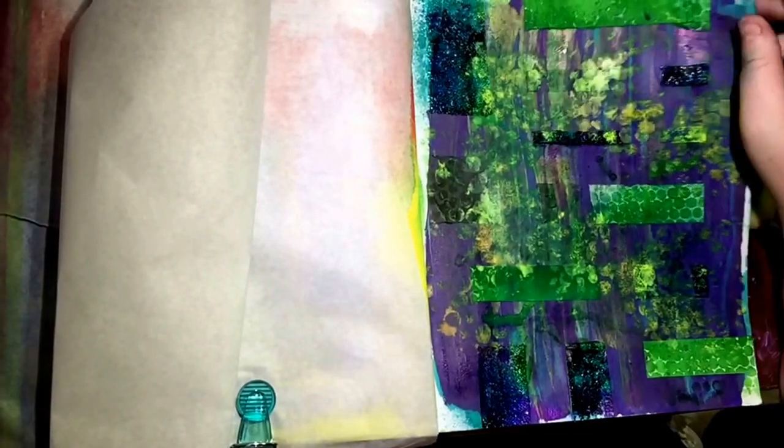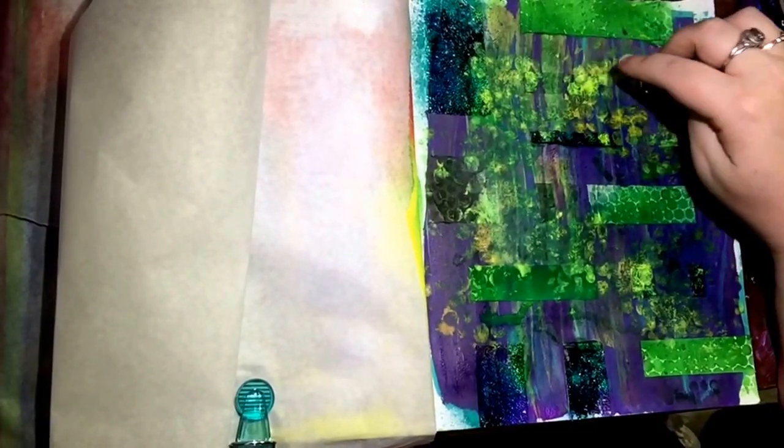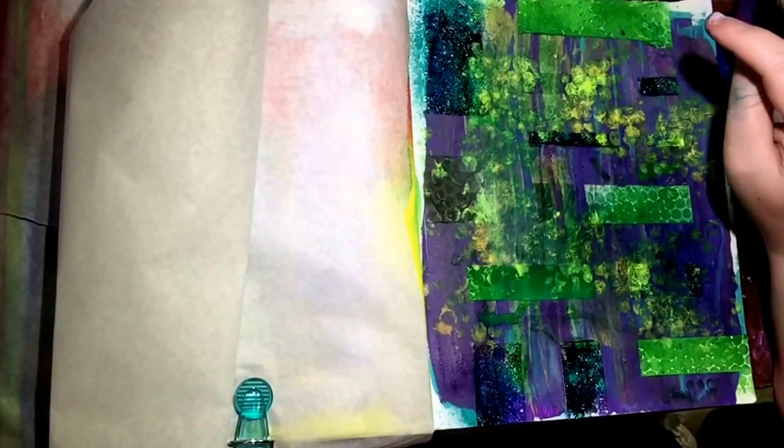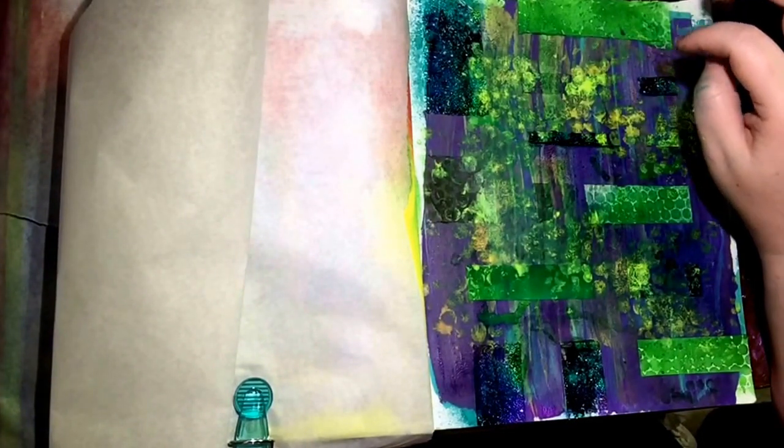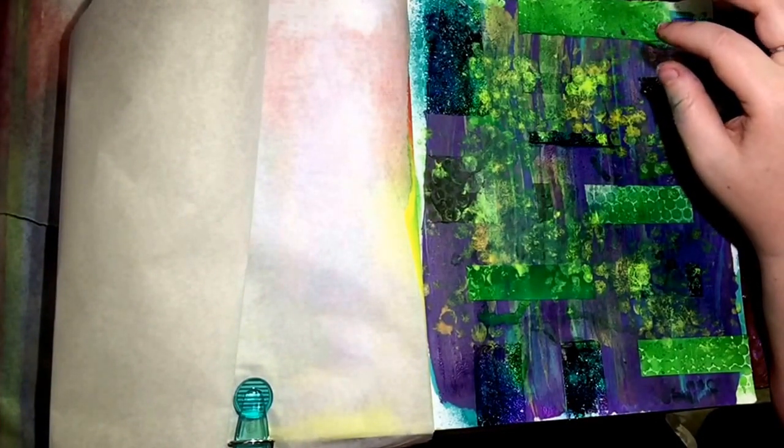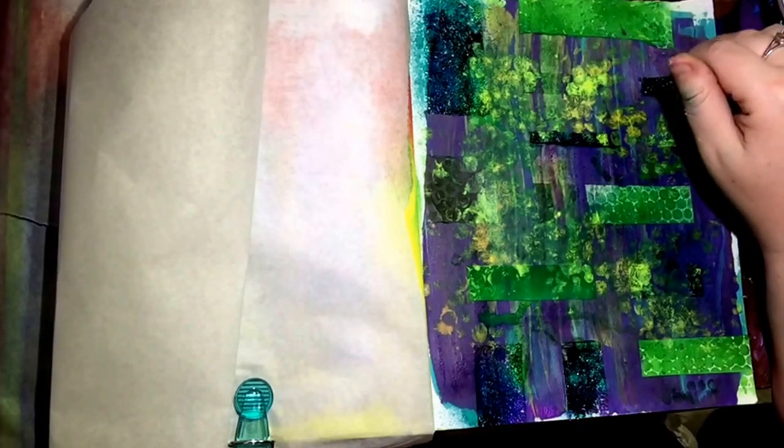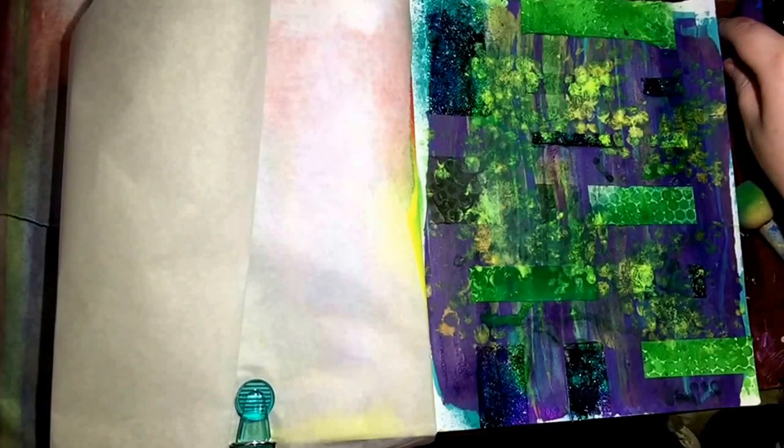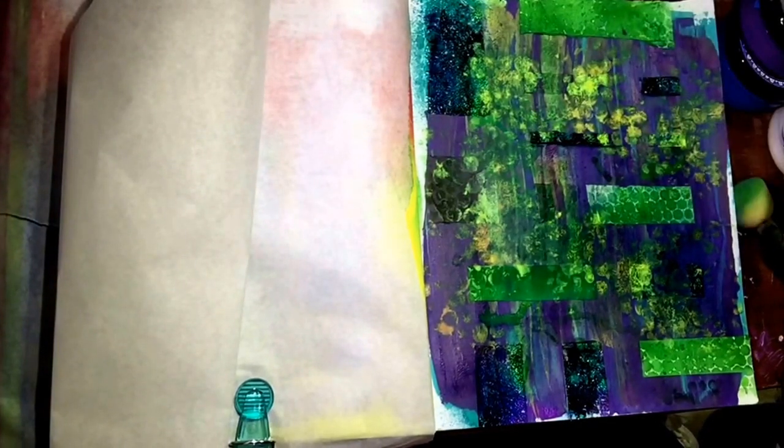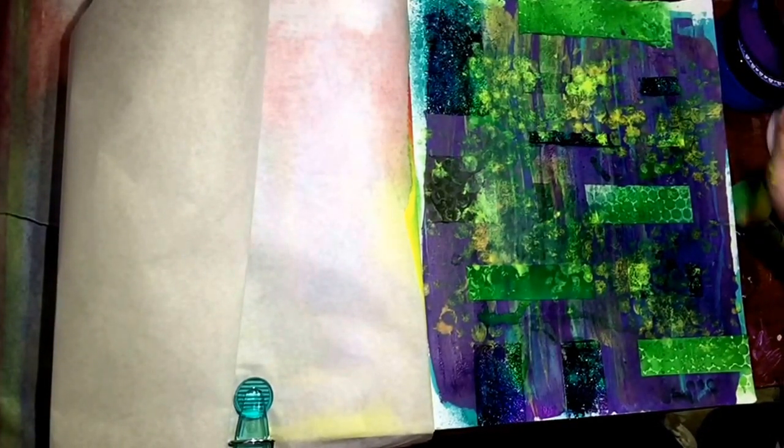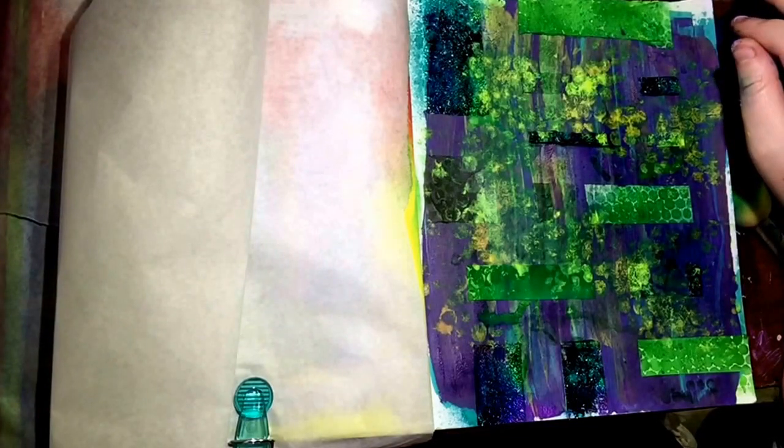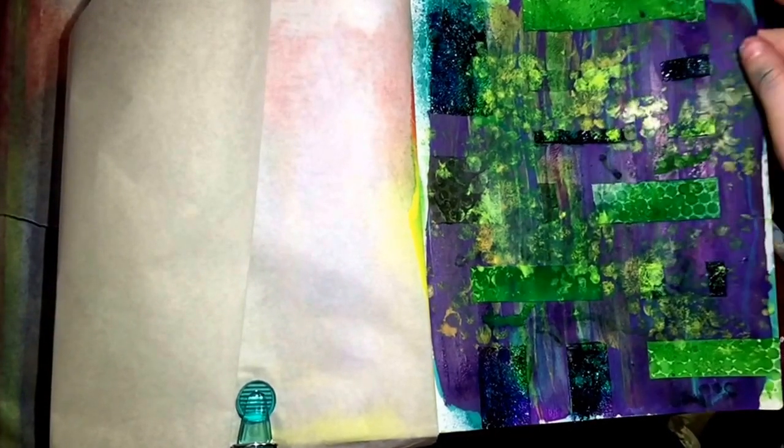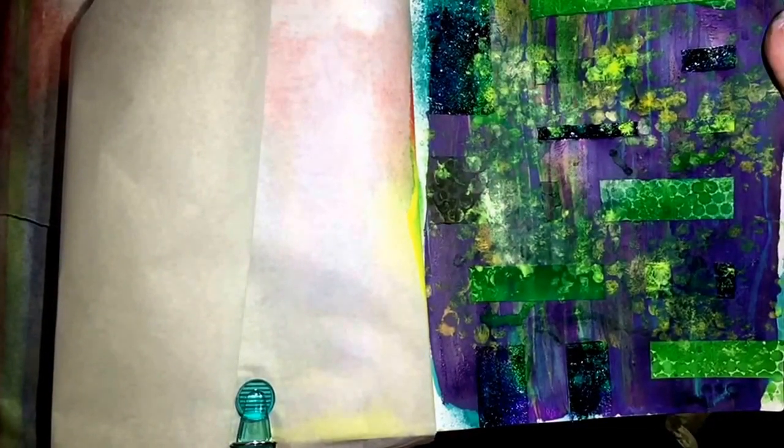These little yellow dots, I took my bubble wrap and dabbed that in my Lemon Zest paint and dabbed it all over the page. It started out having a very uniform pattern of some sort. I didn't like it too much so I kind of messed it up a little to appease myself.